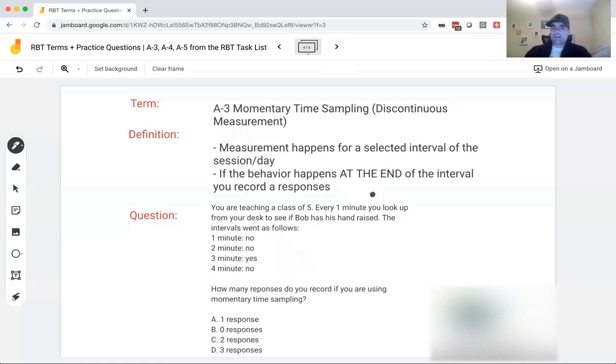Alright. Momentary time sampling. Our final discontinuous measurement. Same idea. We pick out a portion of time, we break it into intervals, and we start recording. Momentary time sampling could be good when you're in a group, and you have a group of kids, and you can only record data on each one every so often. So if the behavior happens at the end of the interval, you record a response. So let's say you pick 20-second intervals, you would set a timer, and at 20 seconds, if the behavior happens, you record a response at 40, at 60, so on.